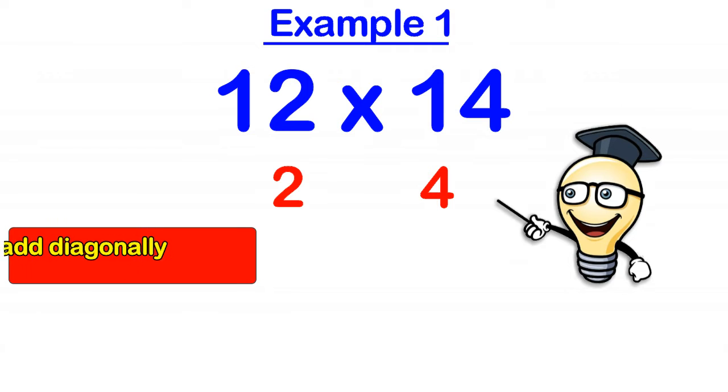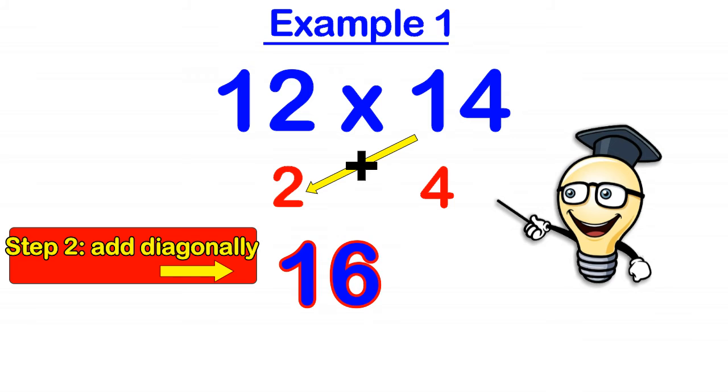Then step 2, what we do is we add diagonally. So we can do 14 add 2 and that gives us 16. We can notice that we also get the same answer if we do 12 add 4. It doesn't matter which order you do it as long as you add diagonally. So we got 16 as the first part of the answer.